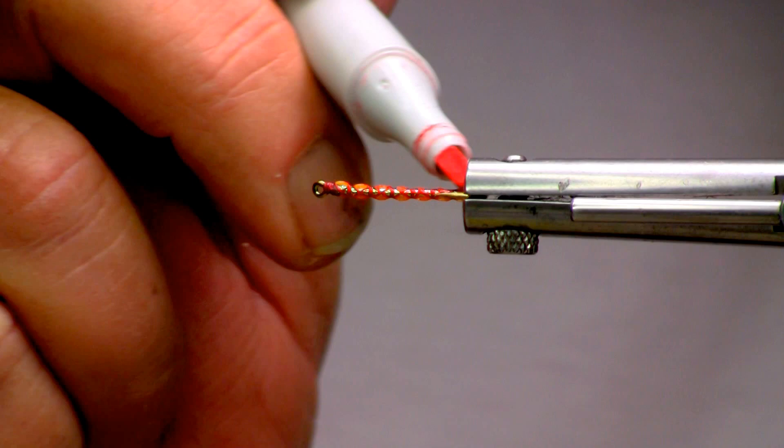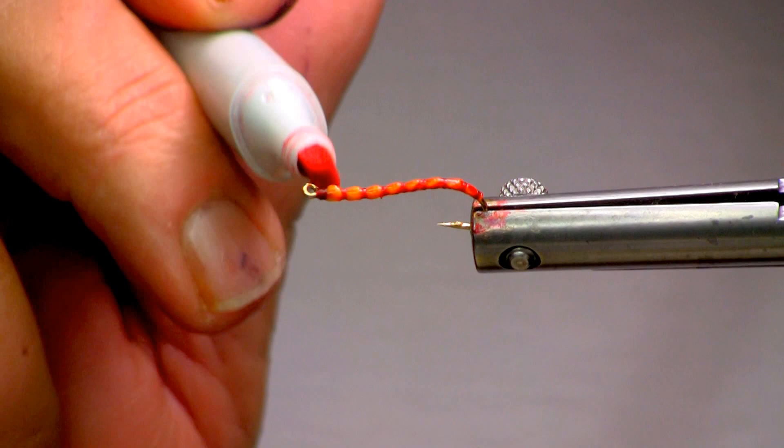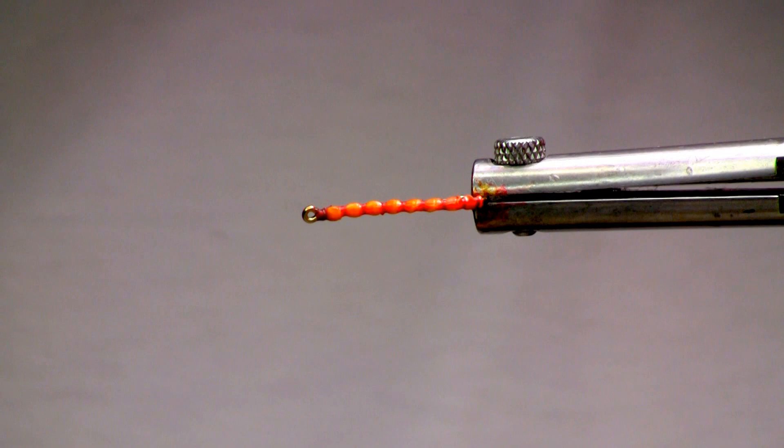But before it dries, what I'll do is I'll run my fingers down either side just to lighten up the tone. And if I'm not happy with it, I'll just start over again. And there I have the color that I desire. A lot of yellow, red, and orange in the pattern.